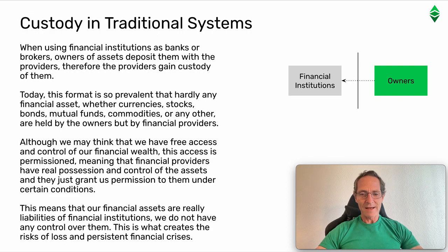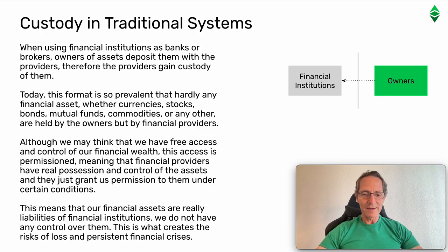Although we may think that we have free access and control of our financial wealth, this access is permissioned. Meaning that financial providers have real possession and control of the assets, and they just grant us permission to them under certain conditions. This means that our financial assets are really liabilities of financial institutions. We do not have any control over them. This is what creates the risks of loss and persistent financial crisis.